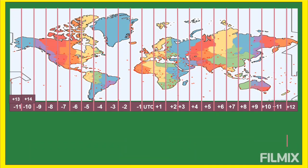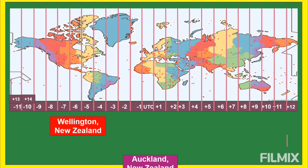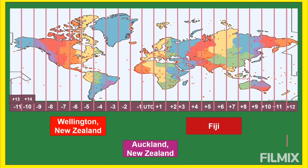Now we are at GMT+12, twelve hours ahead of UTC, which is four hours ahead of the Philippines. These places include Wellington (New Zealand), Auckland (New Zealand), and Fiji, plus other countries under GMT+12. That's all for part one!